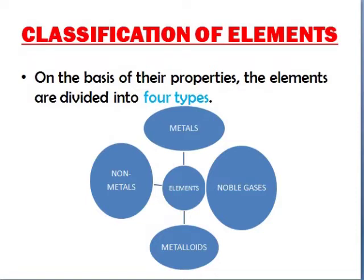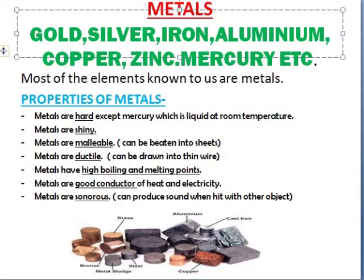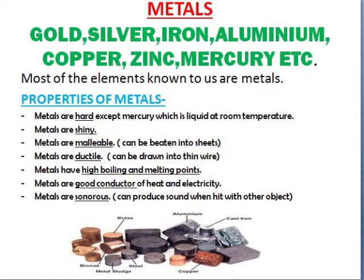Now we will study all four types of elements one by one. The first type is metals. Examples of metals are gold, silver, iron, aluminium, copper, zinc, mercury etc. All of these are kinds of metals. If we look around ourselves, we will find many kinds of metals around us. Most of the elements known to us are metals.